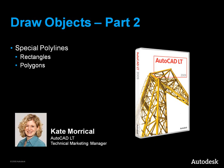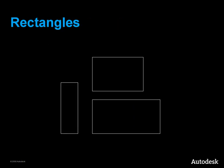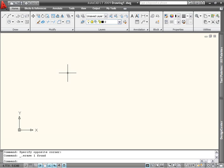This video will show you how to create two special kinds of polylines in AutoCAD LT: rectangles and polygons. Let's start with the rectangle command. The rectangle command is located on the draw panel of the home tab.